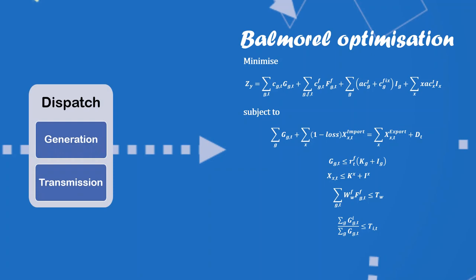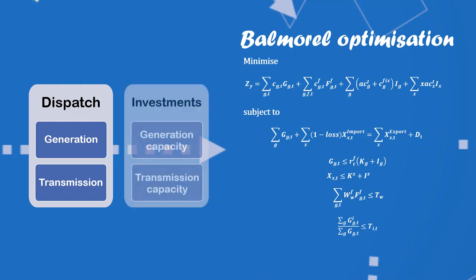Balmorell optimizes the dispatch on each unit in each connection hourly, while the investments in generation capacities and transmission capacities are optimized annually. The dispatch and the investments are optimized simultaneously.